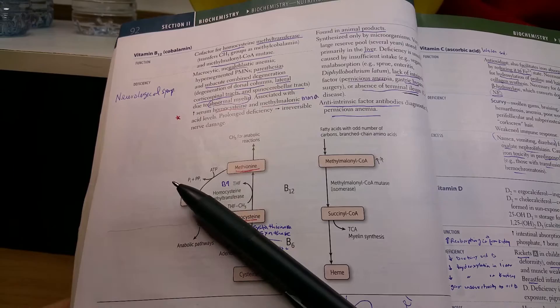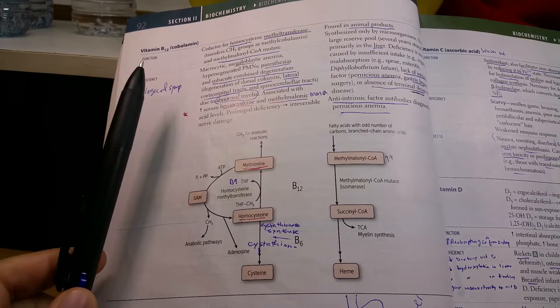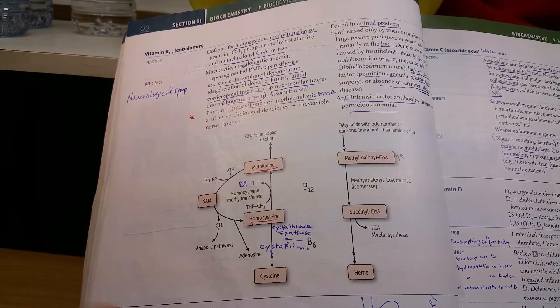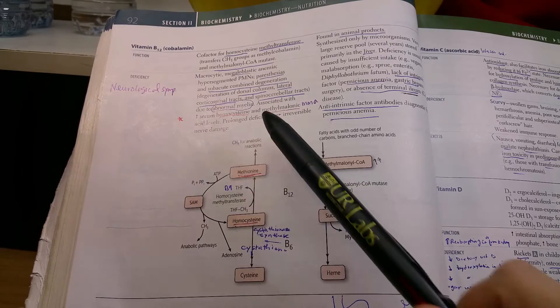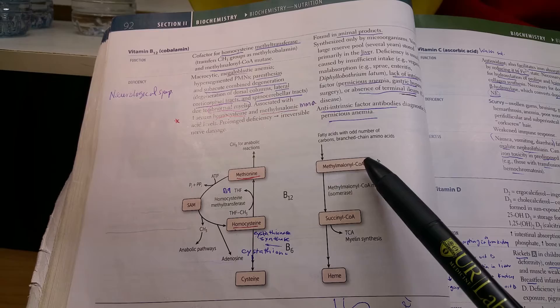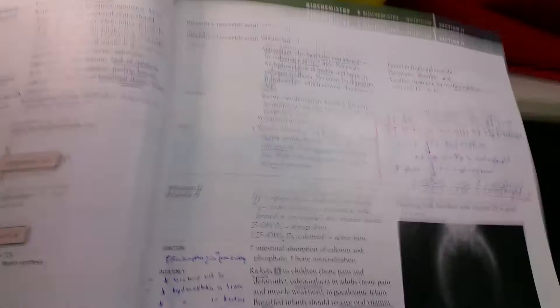In deficiency, it's similar to vitamin B9, causing macrocytic or megaloblastic anemia. But there's something different here: it affects the nerves, causing something called subacute combined degeneration of the dorsal and lateral columns. It affects the myelin. How do we diagnose it? Increased level of homocysteine because it cannot be converted to methionine, and increased methylmalonic acid levels.